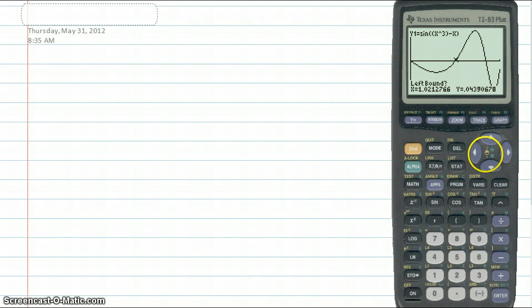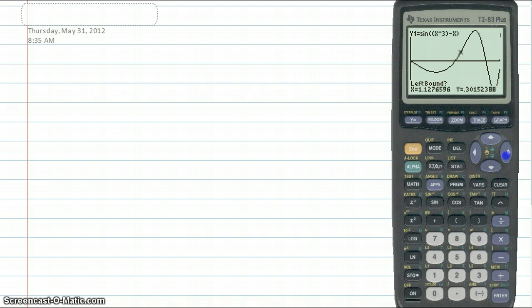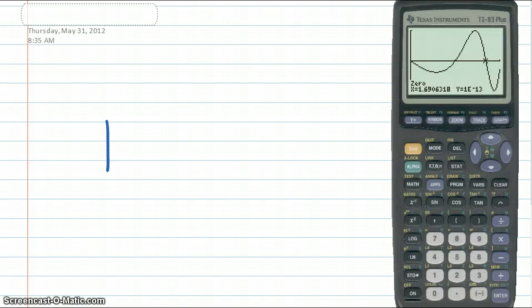And it's about 1. So, then we calculate the other 0, and that's over here. And we write down. And so, it's from 1 to 1.69.